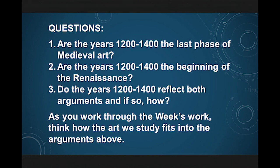I believe number three has a lot of weight behind it — the idea that 1200 to 1400 is never going to be a perfect dividing line where the Renaissance starts here and the medieval ends here. I just want you to start looking at art to figure out why these questions came about: what looks medieval, and what's starting to look like the Renaissance?